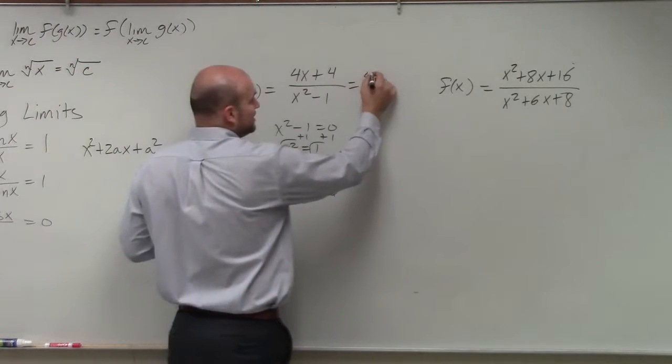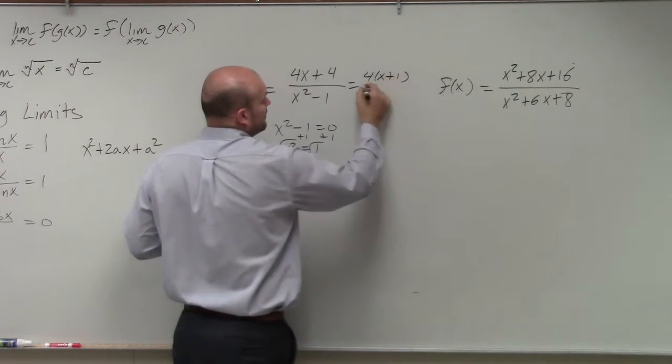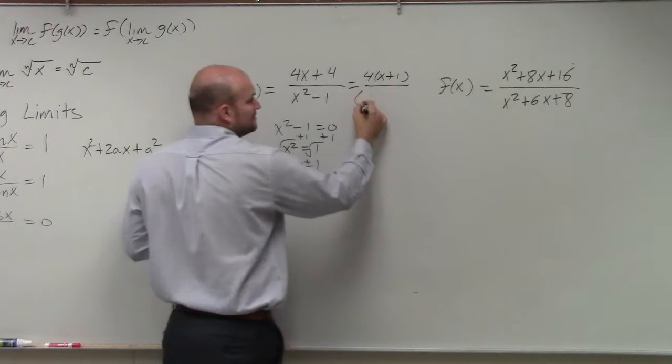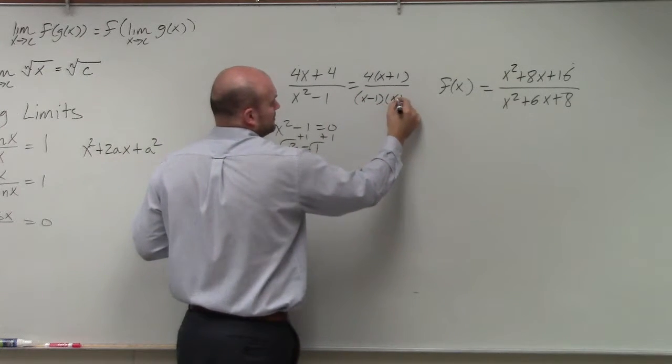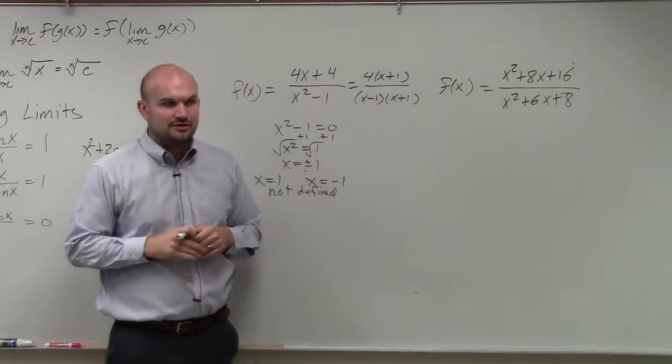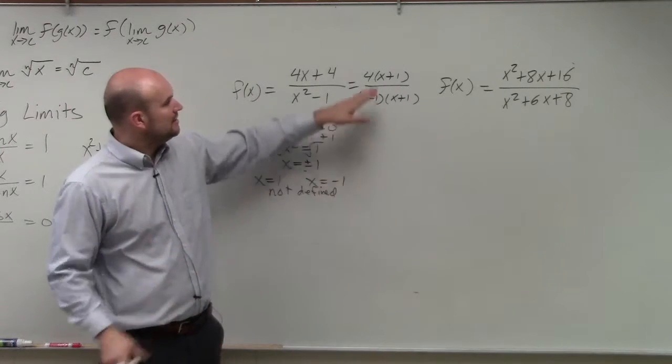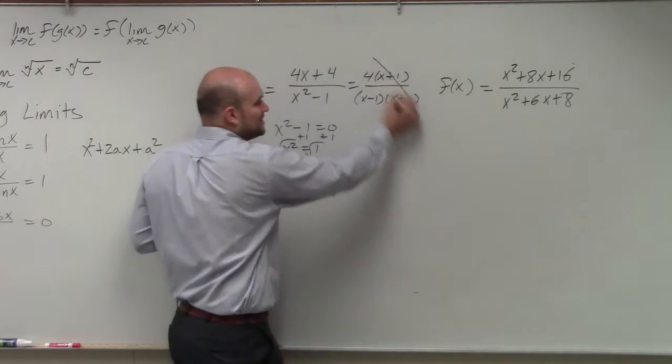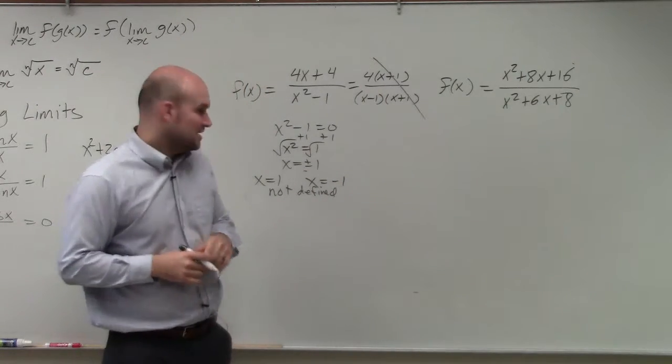So we factor the numerator. We factor the denominator. Numerator, I factored out GCF. Denominator, I factored out using the difference of two squares. We now see that x plus 1 divides out. So therefore,